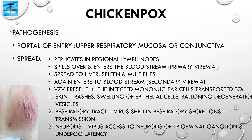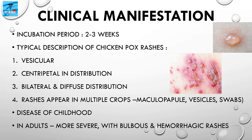The incubation period of chickenpox is two to three weeks. The typical rashes are vesicular and centripetal in distribution — usually starting on the face and trunk and spreading rapidly to involve the flexor surfaces. They are bilateral and diffuse. The rashes appear in multiple crops, meaning lesions in various stages of evolution — macules, papules, vesicles, and scabs — can be found in one area at the same time.